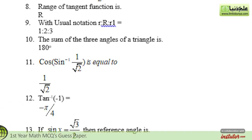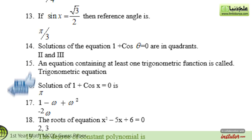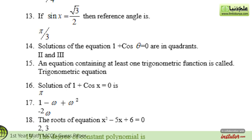The eleventh statement is: cos(sin⁻¹(1/√2)) equals — the correct option is 1/√2. The twelfth statement is: tan⁻¹(−1) equals — the correct option is −π/4. The thirteenth statement is: if sin x equals √3/2, then the reference angle is — the correct option is π/3. The fourteenth statement is: solutions of the equation 1 plus cos θ equals 0 are in quadrants — the correct option is 2 and 3.